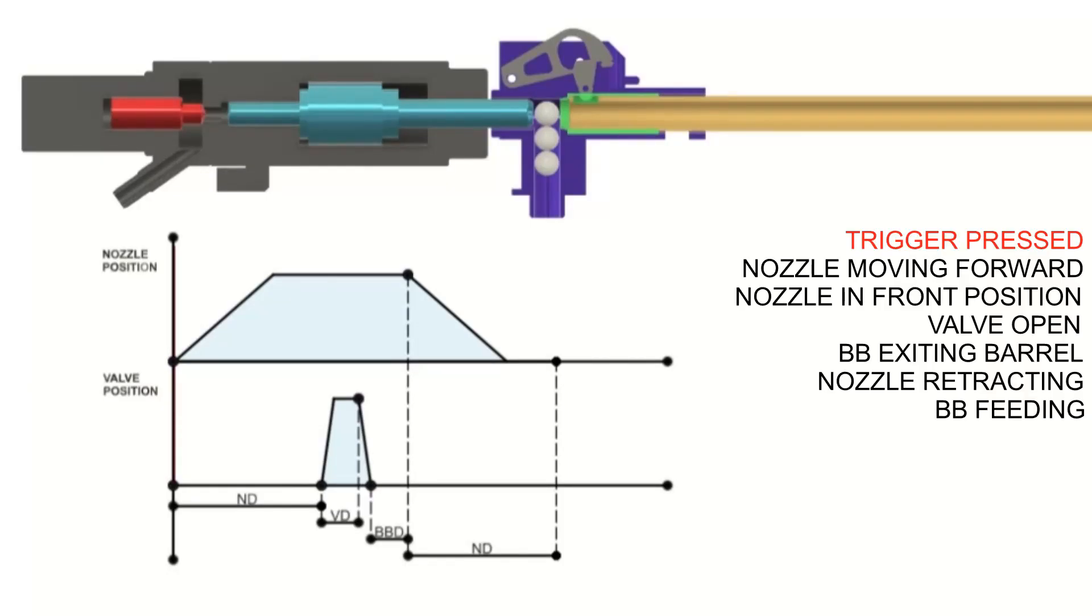After trigger is pressed, nozzle coil is energized and nozzle starts to move forward. BB is being loaded inside the hop-up chamber. At this point you can see that BB is already fully loaded inside the hop-up chamber.